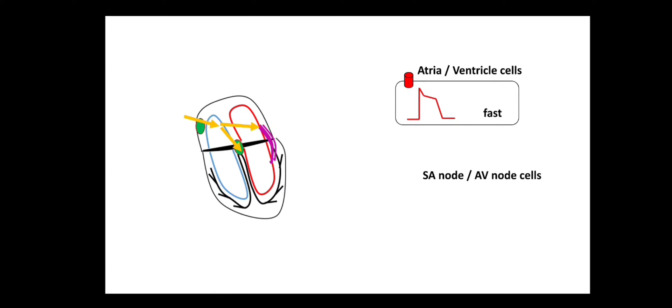In contrast, when you check SA node or AV nodal cells, depolarization in these cells requires calcium channels. Calcium influx causes depolarization in the SA node, AV node, or Purkinje cells, and this process is very slow. These calcium channels take more time to cause depolarization, making SA node, AV node, and Purkinje cells slow conductors of impulses. Cells where sodium channels cause depolarization — like atrial and ventricular cells — conduct impulses very quickly.